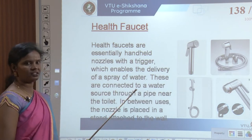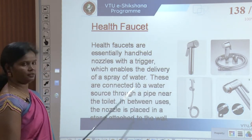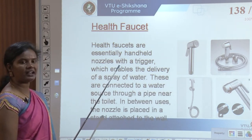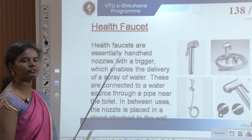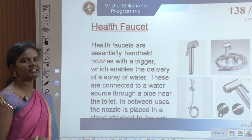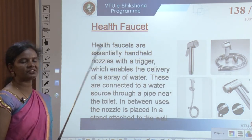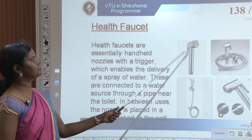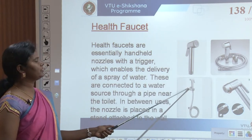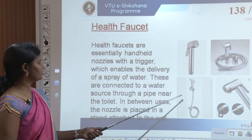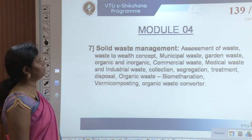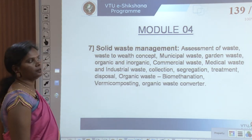A health faucet — faucet being another name for tap — is essentially a hand-held nozzle with a trigger that enables delivery of a spray of water. These are connected to a water source through a pipe near the toilet. Between uses, the nozzle is placed in a stand attached to the wall. It has a hand jet, hand spray trigger, and pipe connected to the wall.